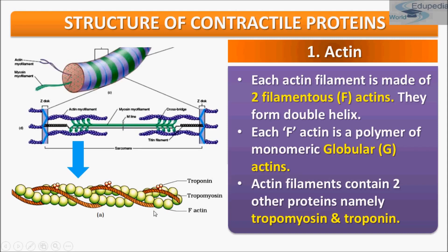Actin is made up of two filamentous F-actins that form a double helix model — this is the first filamentous actin and this is the second filamentous actin. F-actin is a polymer of monomeric globular actin. The actin filament also contains two other proteins, namely tropomyosin and troponin.